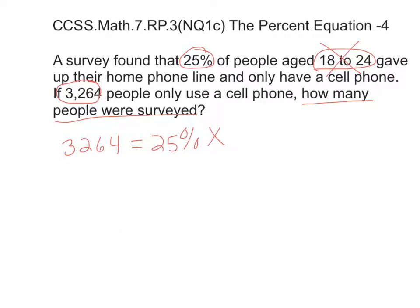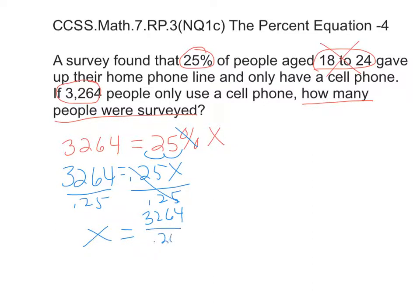So 3,264 equals 25%. Let's start solving this. Let's get rid of the percent and go to a decimal here. So it's 3,264 equals 0.25X. We're working on the X side and we want X all by itself, so we're going to divide both sides by 0.25. We get X equals 3,264 divided by 0.25.